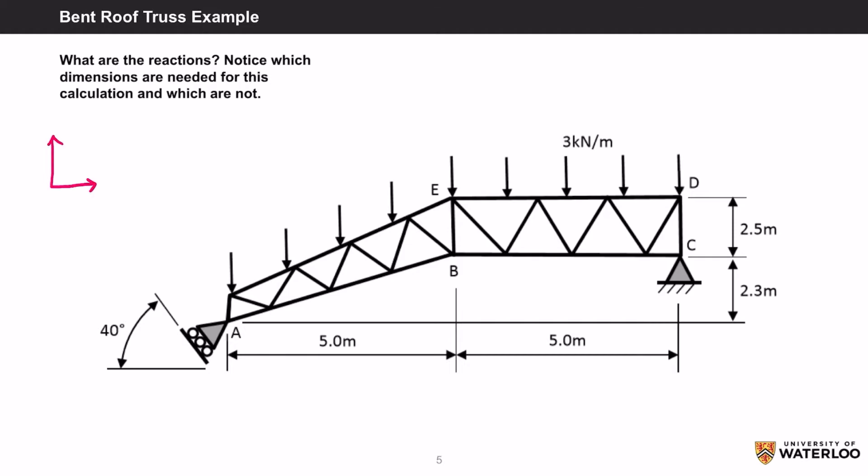We should start by drawing our coordinate system and then draw the reaction forces at each point. Remember that a roller support resists translation in the y direction and the pin support resists translation in the x and y direction. Let's also turn that distributed load into a point load by taking the force applied, which is 3 kN per meter, times the distance it spans, which is 10 meters, giving us 30 kN. We place it at point E because it's the center of the distance.